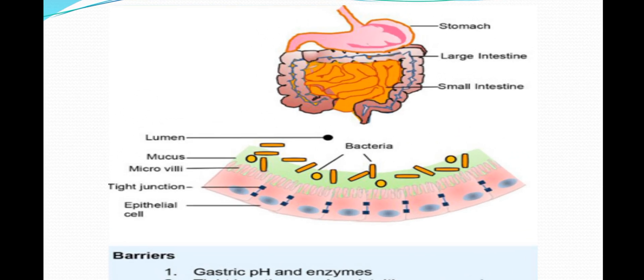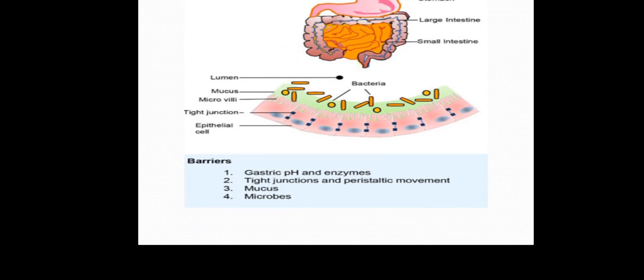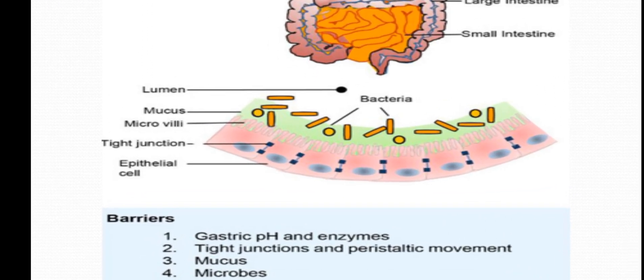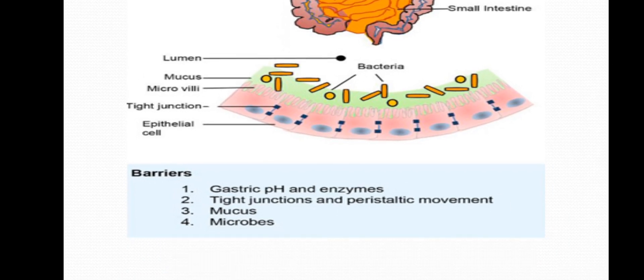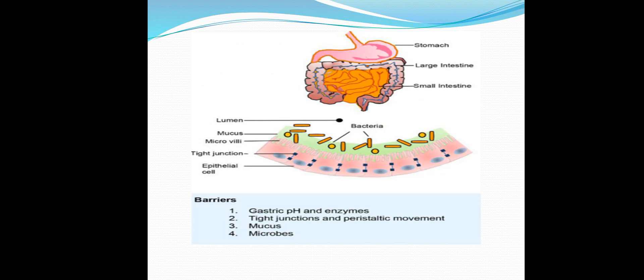Absorption through the stomach occurs via the large and small intestine. The stomach contains layers: the topmost mucosal layer, then microvilli, tight junctions, and epithelial cells. Barriers to GIT absorption include: gastric pH, which can degrade the vaccine; tight junctions, which prevent drug absorption through cells; mucus, which produces thick layers preventing absorption; and microbes, which can degrade the vaccine.